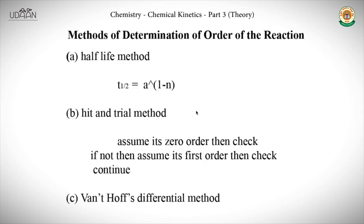Now let's see the methods of determining the order of a reaction. There are 4 methods. The first method is the half-life method. The half-life method gives T half, and we look at how it varies with the power of the initial concentration. If the power of the initial concentration is 0, it means N is equal to 1, meaning the reaction is first order.